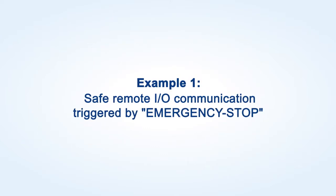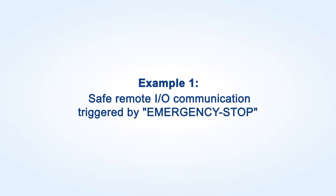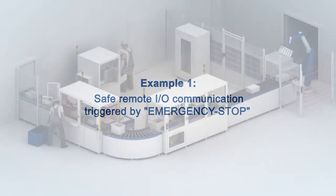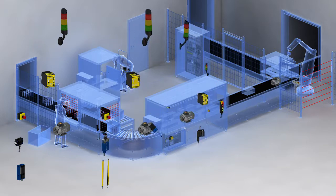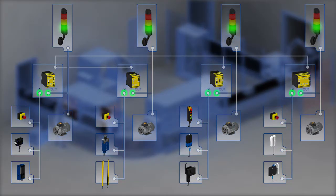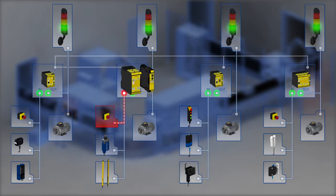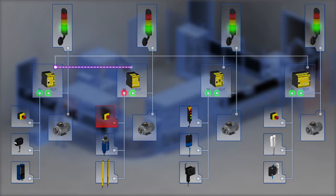Example 1 – Safe remote I/O communication triggered by emergency stop. With the actuation of the emergency stop command in system component 2, the remote I/O module sends a telegram with the information 'emergency stop actuated' to the upstream safety controller. The communication takes place via Ethernet using the internal communication module and the Safe Device-to-Device Communication protocol, SDDC for short.